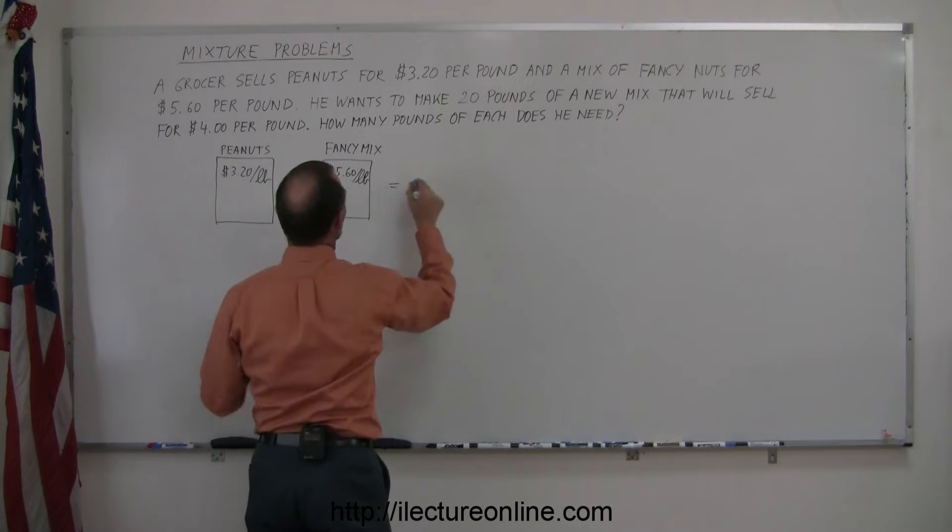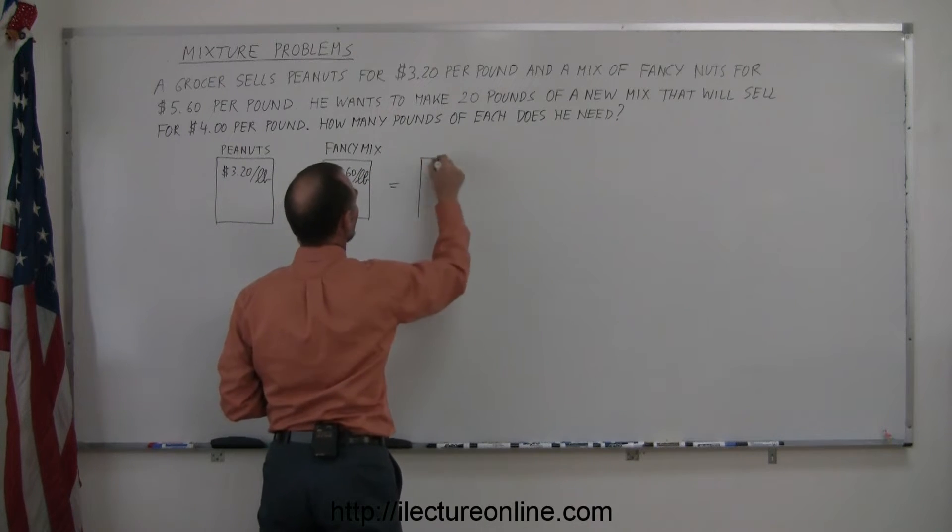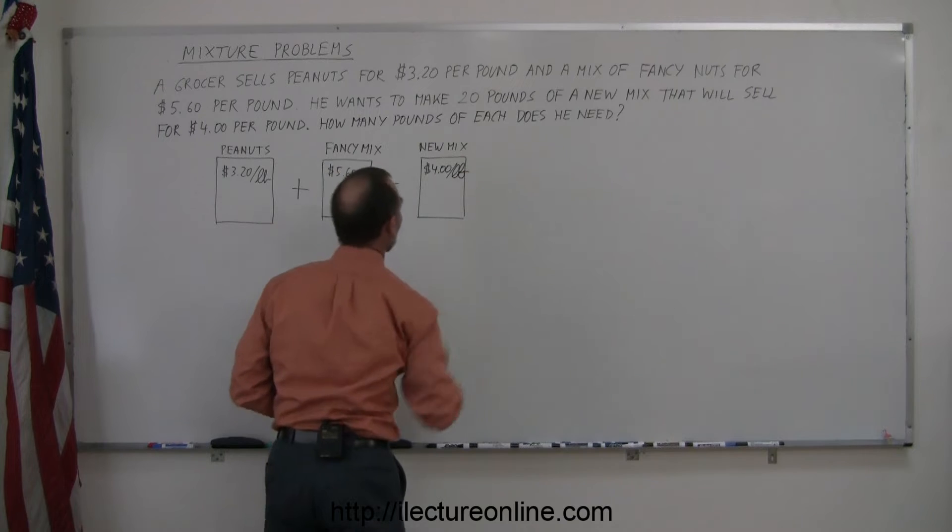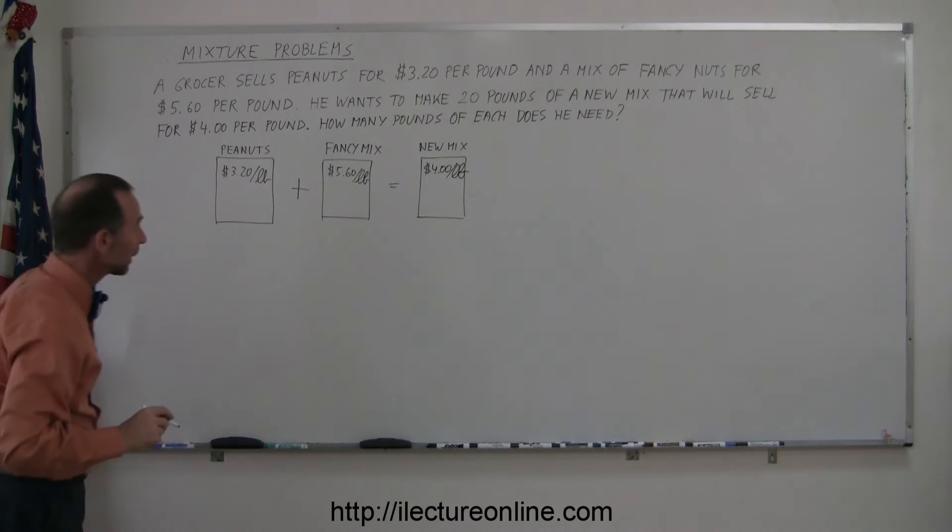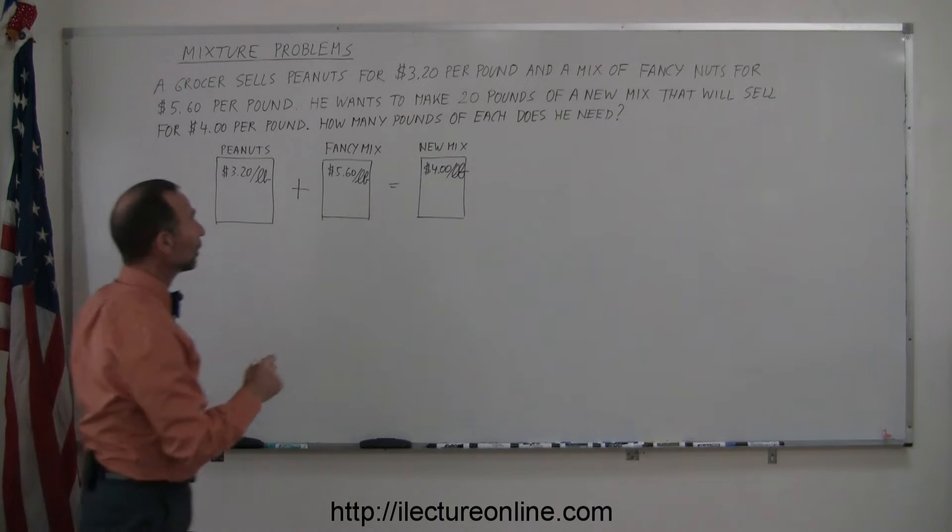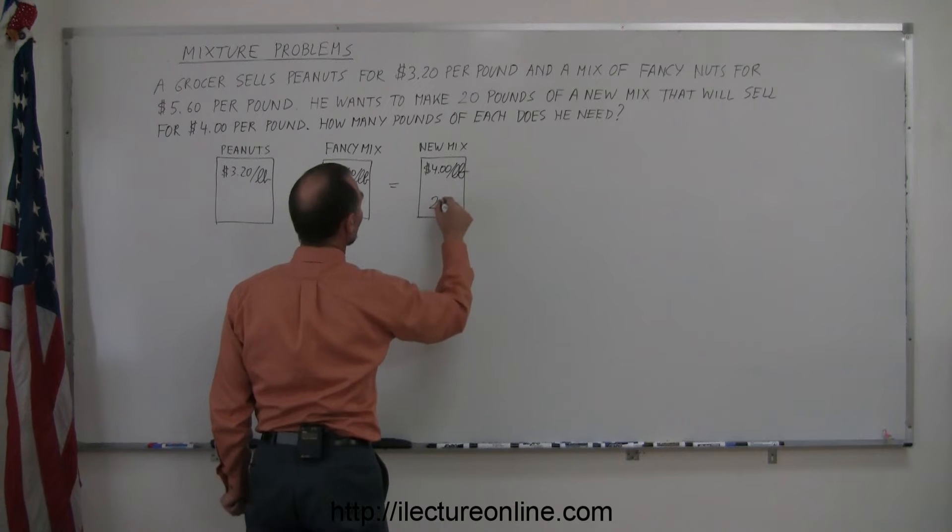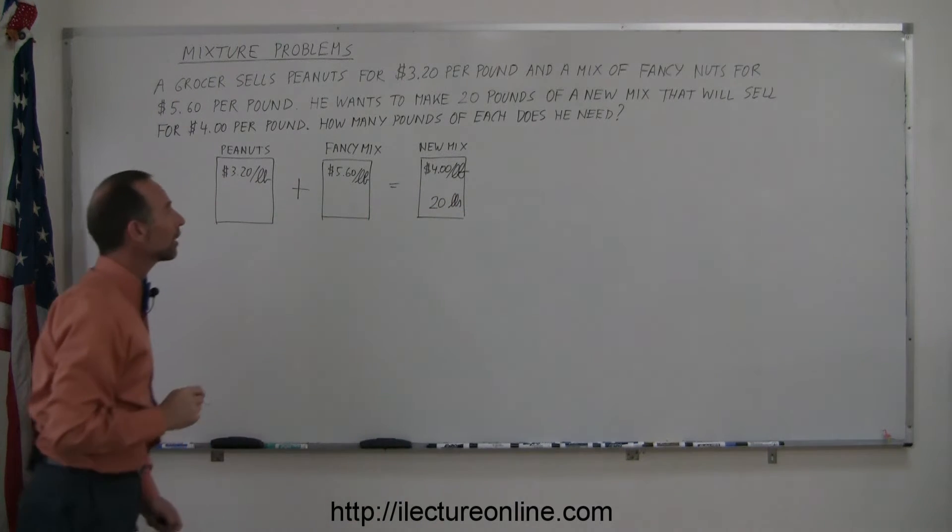When you add them together in some combination, you'll end up with the new mix. That one will sell for $4 a pound. You're supposed to get 20 pounds of the new mix. So let's have 20 pounds right here.